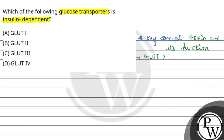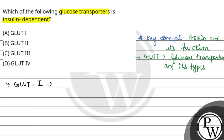GLUT is used to transport glucose and there are various types like GLUT1, GLUT2, GLUT3, and GLUT4. Let's observe these glucose transporters one by one. GLUT1 is an insulin-independent glucose transporter. It is a uniporter, meaning it can transport glucose in one direction only.